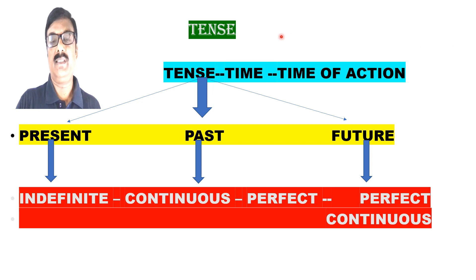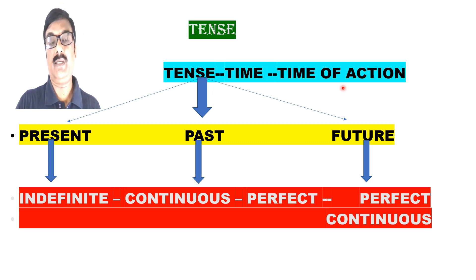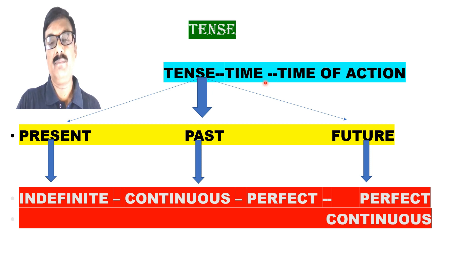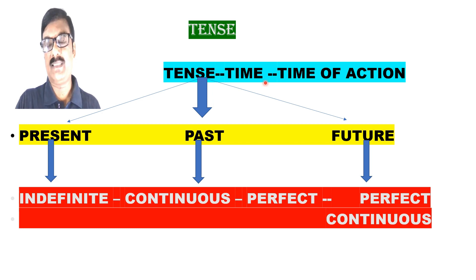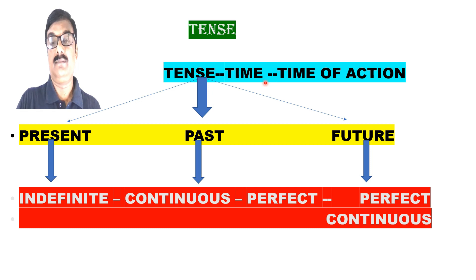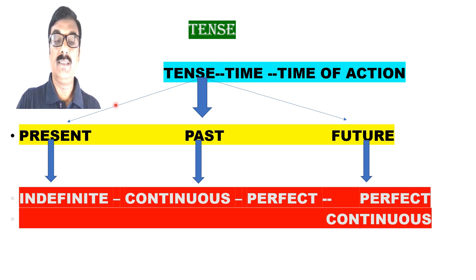So what is tense? Tense means time — but time of what? Time of action. We perform actions every time, actively or passively. So in order to indicate the time of action, we use tense. The tense is divided into three parts: present tense, past tense, and future tense.